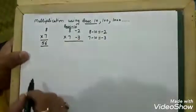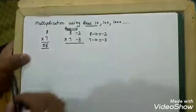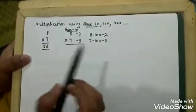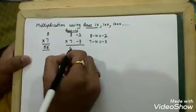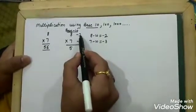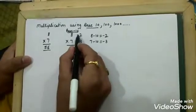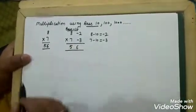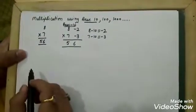What will we get? See, 7 minus 2 is 5, and 8 minus 3 is again 5, so we write 5 here. Then 3 multiplied by 2 is 6 — minus and minus gives a positive value — so the answer is 56. This is a new method.